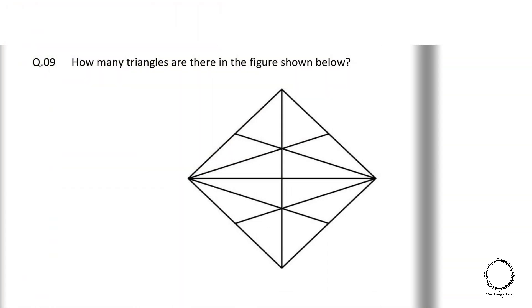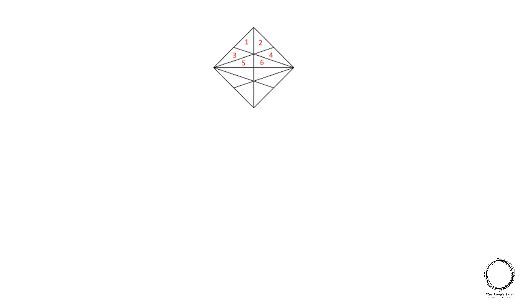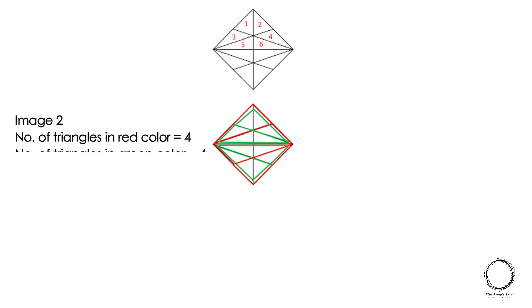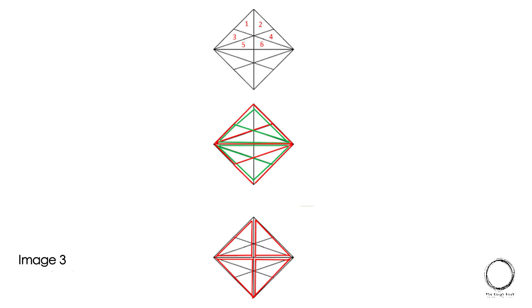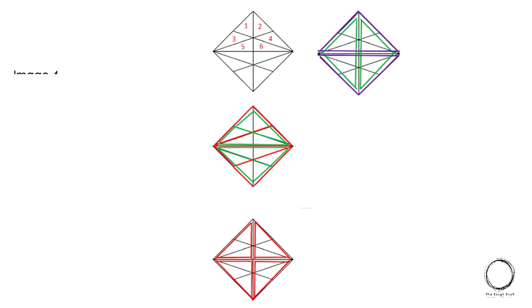Moving on, how many triangles are there in the figure shown below? So in this case start with counting. In the first image, the number of triangles in this image are 12. Next number of triangles in red color equals to 4. Number of triangles in green color equals to 4 which is shown in the image. Next number of triangles shown in the images are 4.